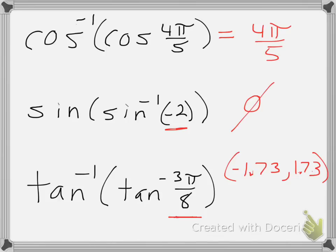So as a decimal, negative 3π over 8 is approximately negative 1.17. So it's clear that this does fall within the appropriate range. So since it's in the range that I want, the answer is just negative 3π over 8.